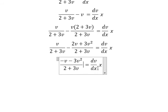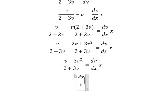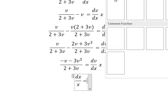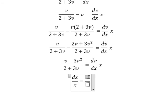Next, dx and x we put on the left, this one we put on the right. So we will have dx over x equals to negative v.